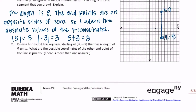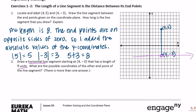Number 2: draw a horizontal line segment starting at (4, negative 3) that has a length of 9 units. What are the possible coordinates of the other endpoint? We know it needs to be 9 units and horizontal. Coming out of (4, negative 3), we could go 9 units this way or 9 units the other way. I'm going to go to the left — counting 1, 2, 3, 4, 5, 6, 7, 8, 9 — and end up right there.